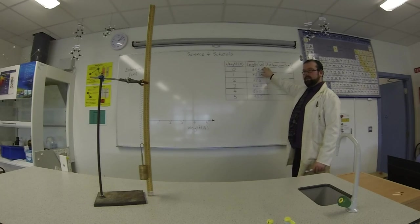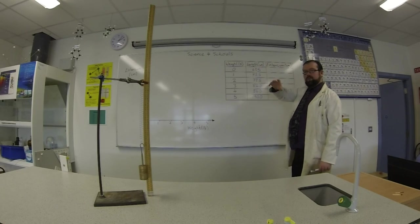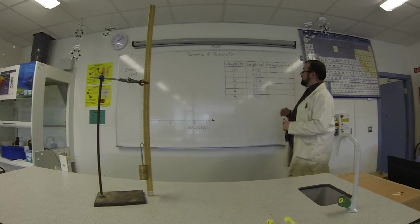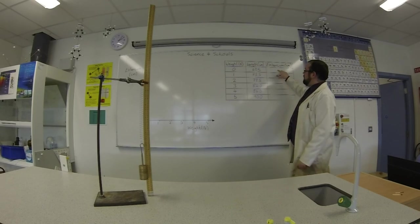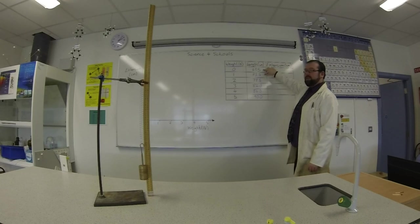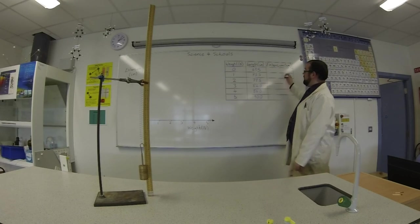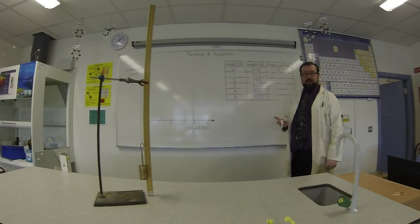Now it's not the length of the spring that's important, or what we read from the meter stick, it's about how much longer it gets when we add those weights. So I'm going to say that 69.5 centimeters is my baseline. There's no extension in the spring at that stage. I haven't added any extra weight.